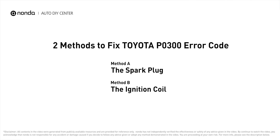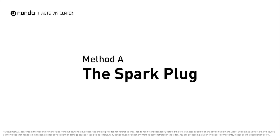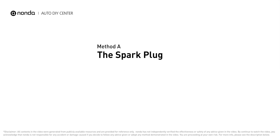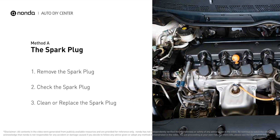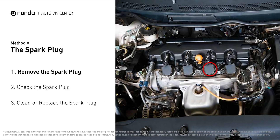Here are two of the most practical solutions to fix Toyota's P0300 error code. Method A: the spark plug. The spark plugs are located at the engine end of the wires, under the plug covers that attach them.